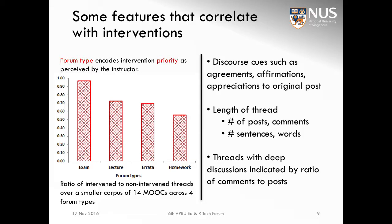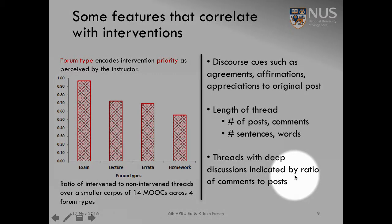On the contrary, looking at homework threads, only about 50% were actually intervened. This means that instructors may view homework as something for student learners to deliberate with their peers, with the instructor stepping in only where necessary to correct misconceptions. Other features we looked at include discourse cues such as agreements, affirmations, and appreciations of the original post, the length of threads including number of posts and sentences or words, and threads with deep discussions as indicated by the ratio of comments to posts.